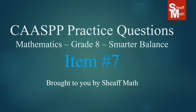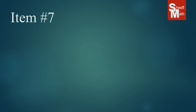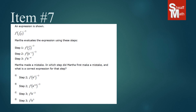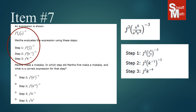CASPI practice test, item number seven. In item number seven, we have an expression with a lot of powers and exponents. It tells us that there's a girl named Martha who evaluates this expression and these are the steps she takes. But she's made a mistake. You're asked to find out which step Martha made the mistake, and what should she have put instead. We're going to expand it and go step by step to show what she did and if she did anything wrong.